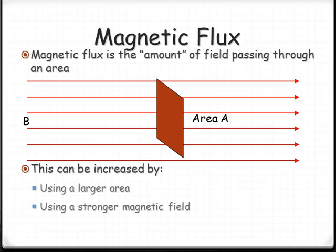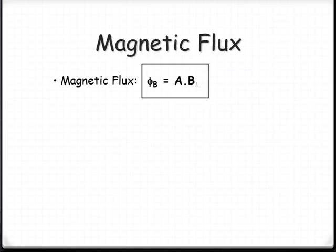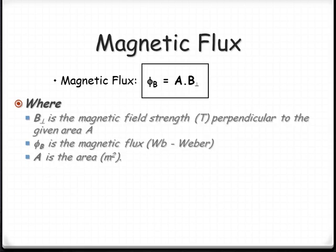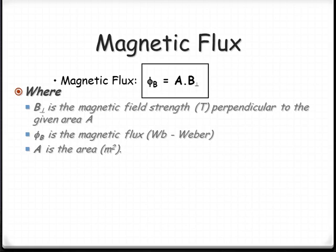So based on that, we can come up with a formula for magnetic flux, and that is the area times the magnetic field strength. Notice I've got a little perpendicular subscript next to the B. That's just to remind us that the two of those things need to be perpendicular. If they're not perpendicular, then we're going to produce a vector component worth of magnetic flux.